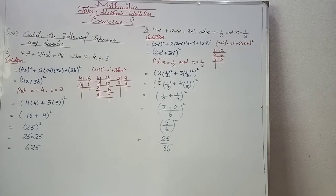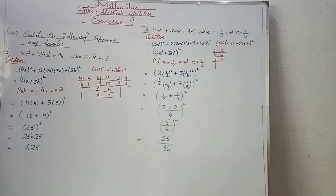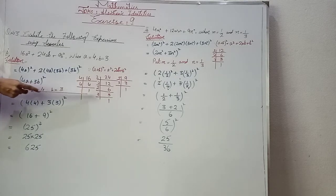We have coefficients 16, 24, and 9. First we find their factors using prime factorization. For 16: 4 times 4, and 4 is 2 squared, so 16 = 2² × 2² = (2²)² = 4². So the first term 16a² = (4a)².